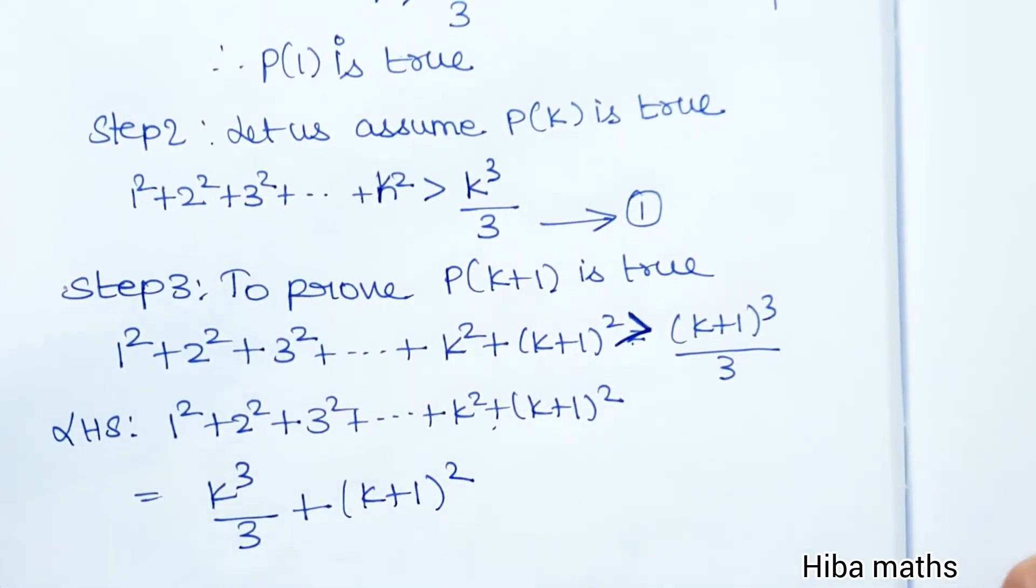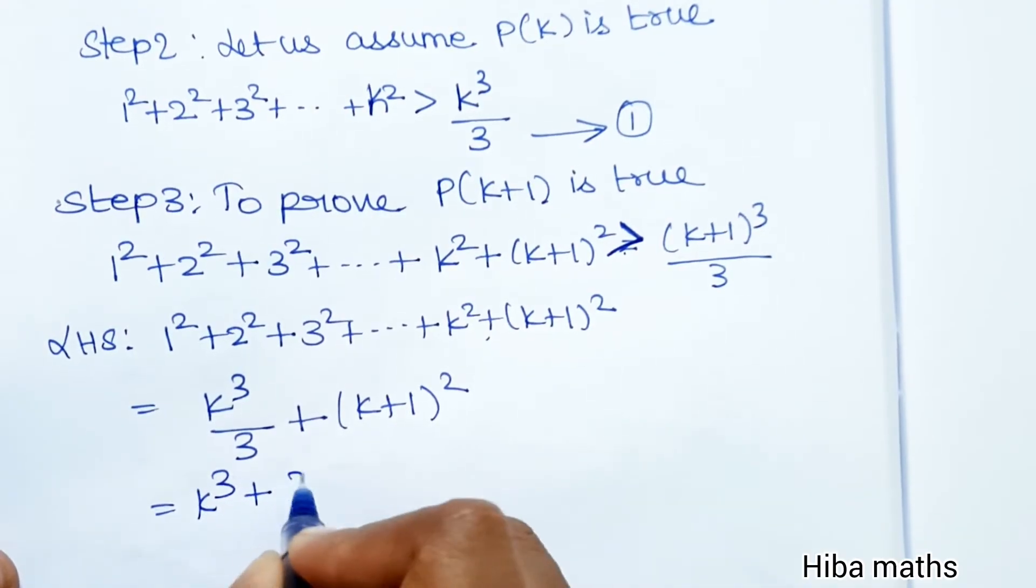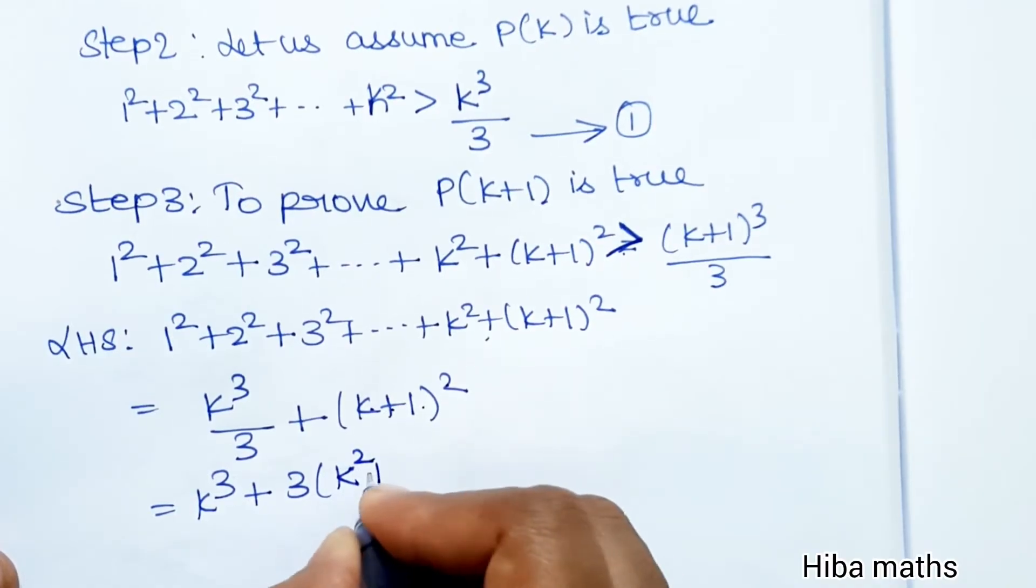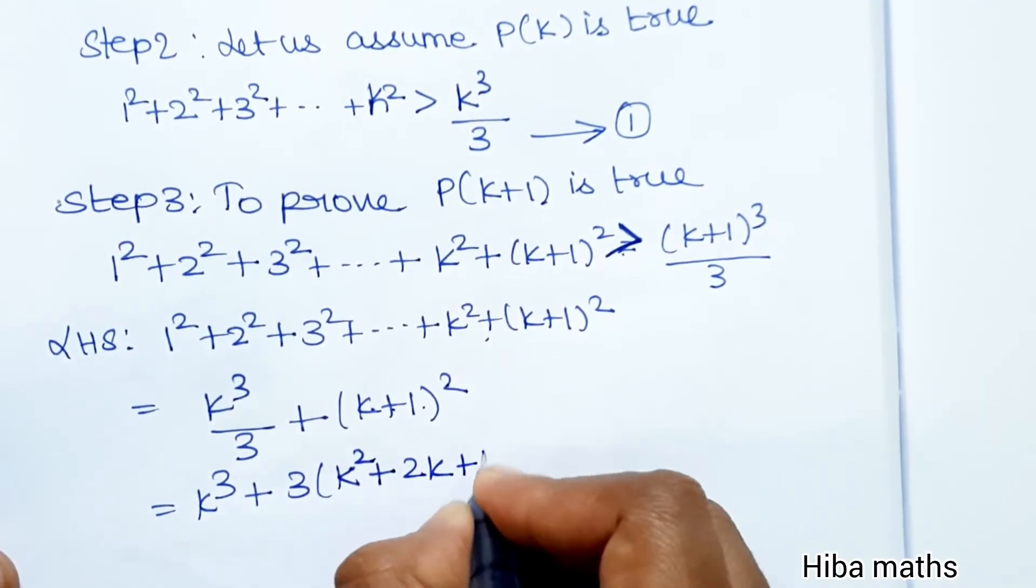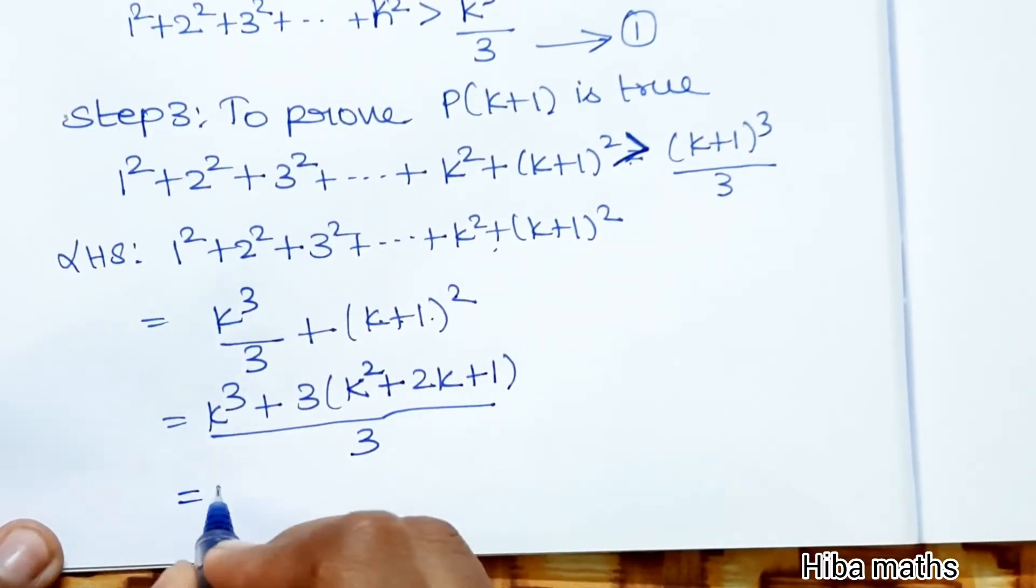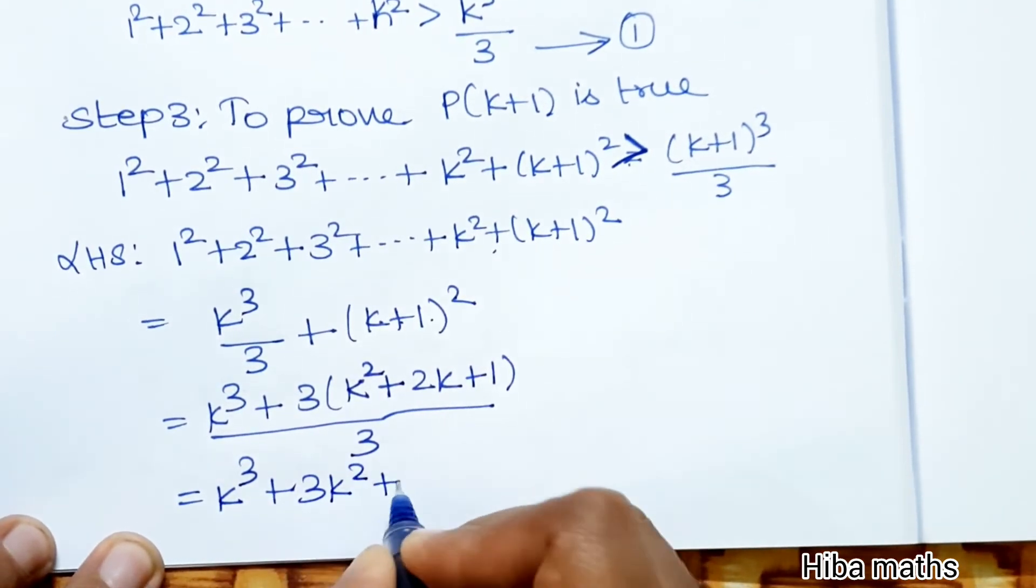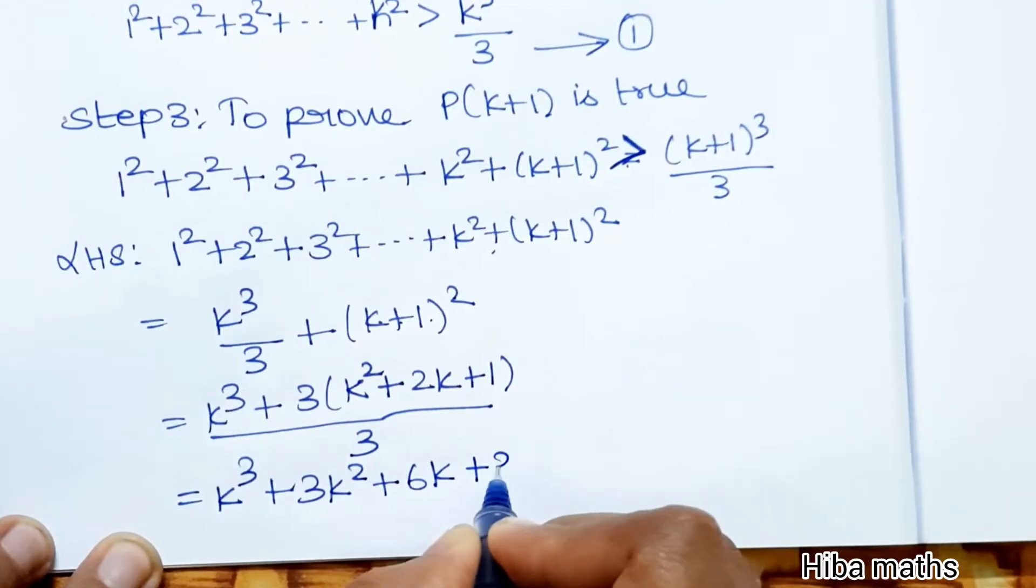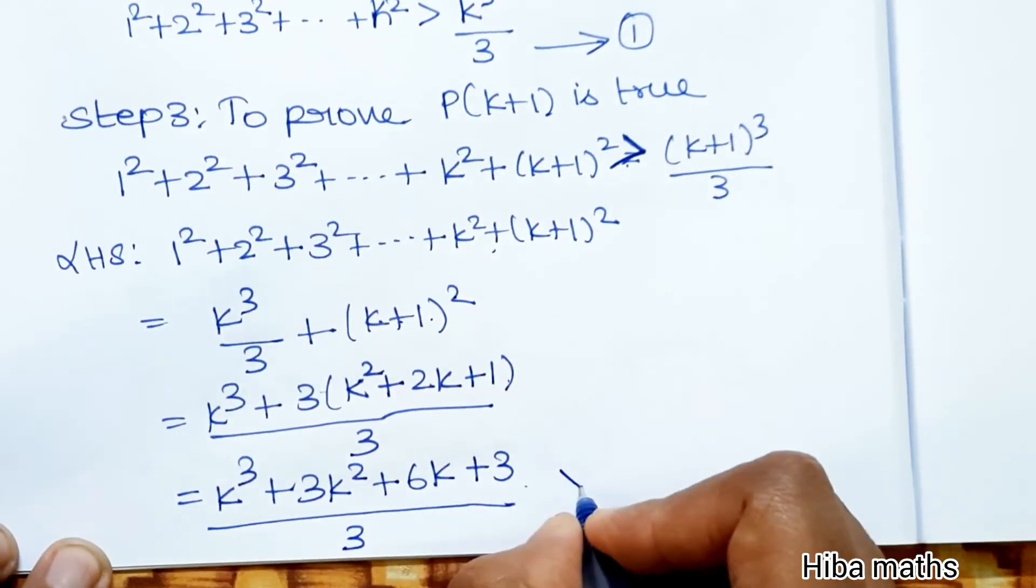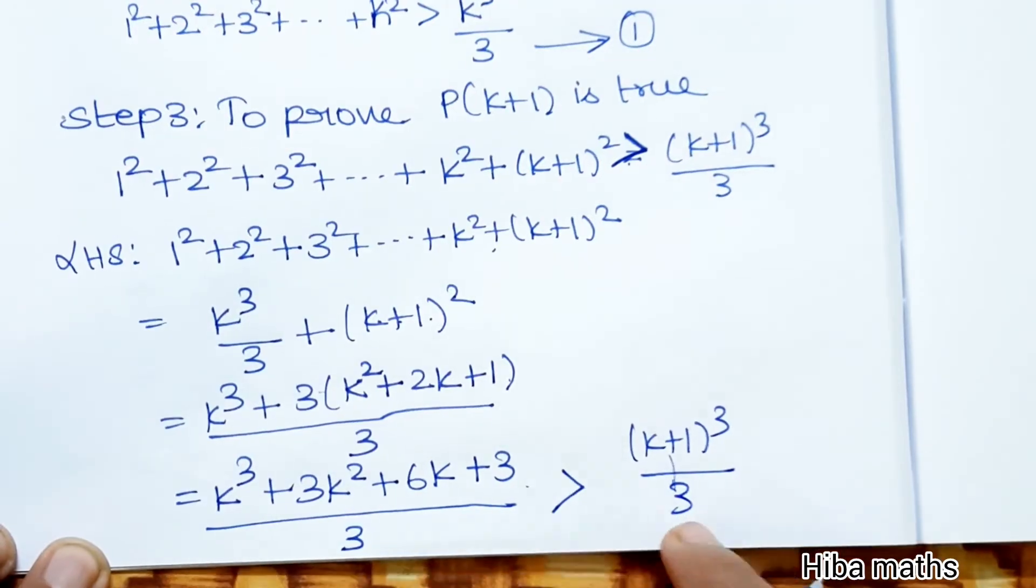(k+1)² = k² + 2k + 1. So we get k³ plus 3 times (k+1)² divided by 3, which equals k³ + 3(k² + 2k + 1) divided by 3. Next line: k³ + 3k² + 6k + 3 divided by 3. Now the full term becomes (k+1)³/3.